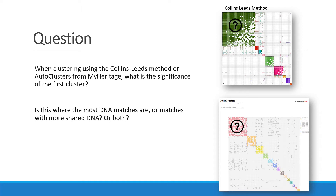The answer is that usually the largest cluster in the top left is the one with the most matches in it, and that's why it's put first. But there are settings on each clustering tool that you can adjust to change how the clusters are ordered, so let's go through some of those.